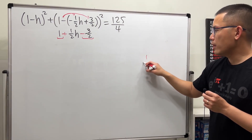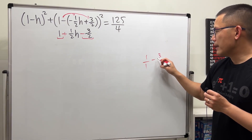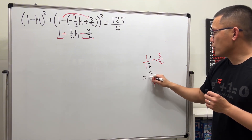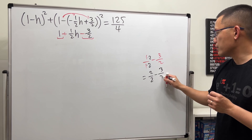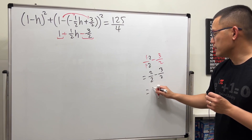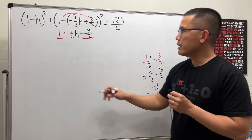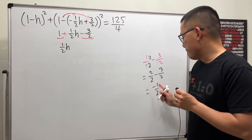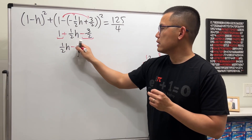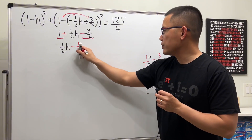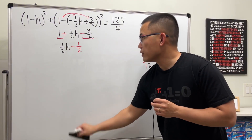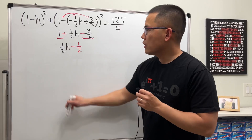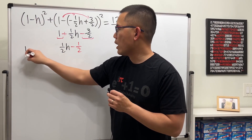Right here, one minus three over two — you can do it on the side. One is the same as one over one, minus three over two. Multiply by two over two, so that's two over two minus three over two, which is negative one over two. So here we have one half h minus one over two.